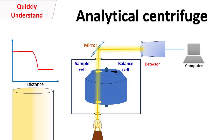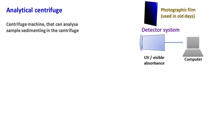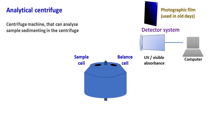Let's talk about the analytical centrifuge. An analytical centrifuge is a centrifuge machine that can analyze sample molecules sedimenting in the centrifuge. The analysis is done by a detector system connected with a computer. The analytical centrifuge uses a vertical tube rotor, which has two slots: one for the sample and the other to balance the sample.